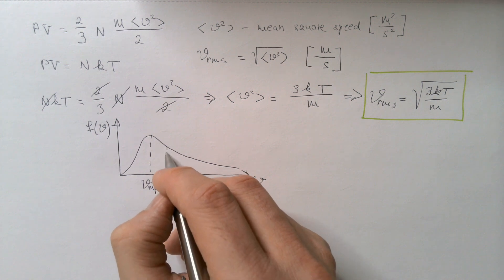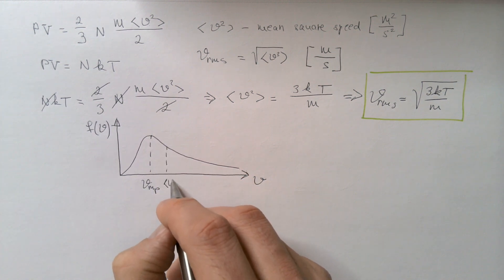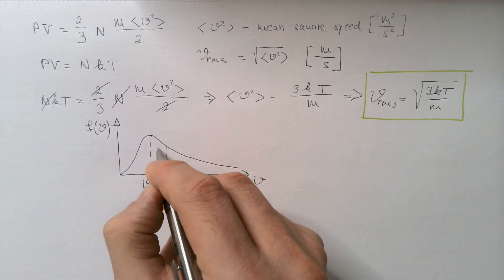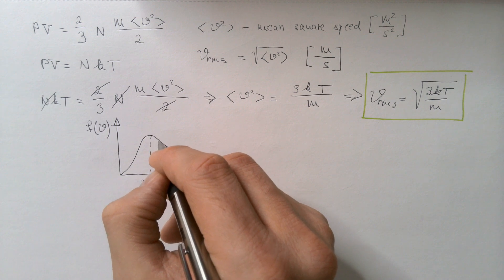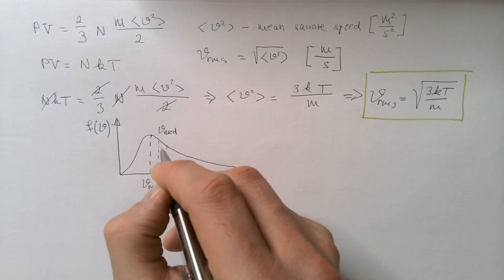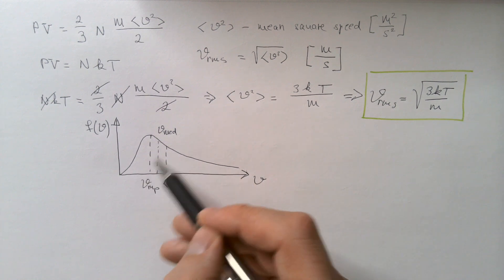And then we, in one of the previous videos, determined that this is mean speed in a gas. And in previous video, we also determined that this characteristic speed over here, V MED, median speed, splits observed speeds into two.